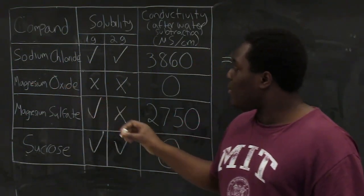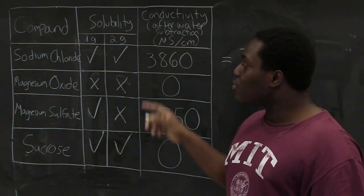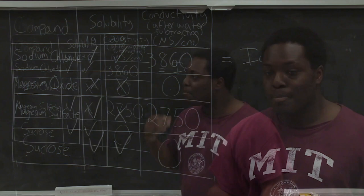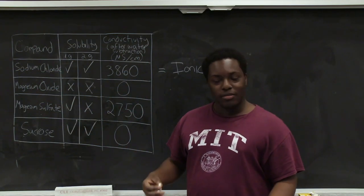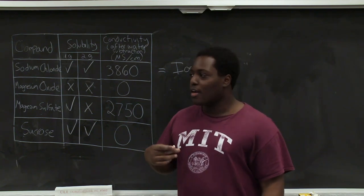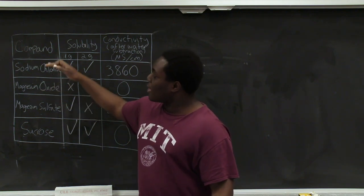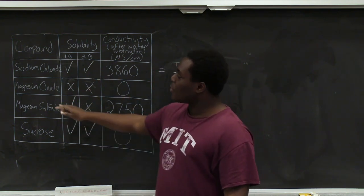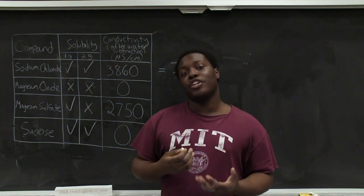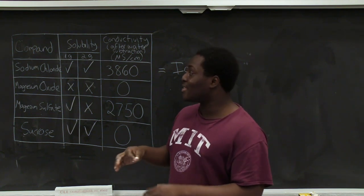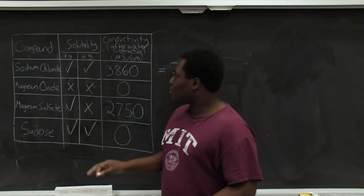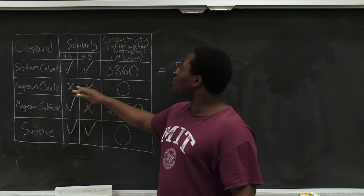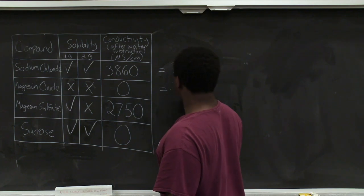Next, we can look at magnesium oxide. At one gram and two grams, we weren't able to dissolve magnesium oxide in water, and because of that, we weren't able to measure any conductivity. But we know that magnesium oxide is an ionic compound from our understanding of bonding. Magnesium oxide and sodium chloride are both ionic compounds, but magnesium oxide has a much higher lattice energy than sodium chloride. This means when magnesium oxide is placed in water, it's more energetically favorable for it to stay as a solid than to dissociate into ions of magnesium and oxygen. So magnesium oxide is still an ionic compound, but its lattice energy is high enough such that it does not dissolve and does not give us conductivity measurements.